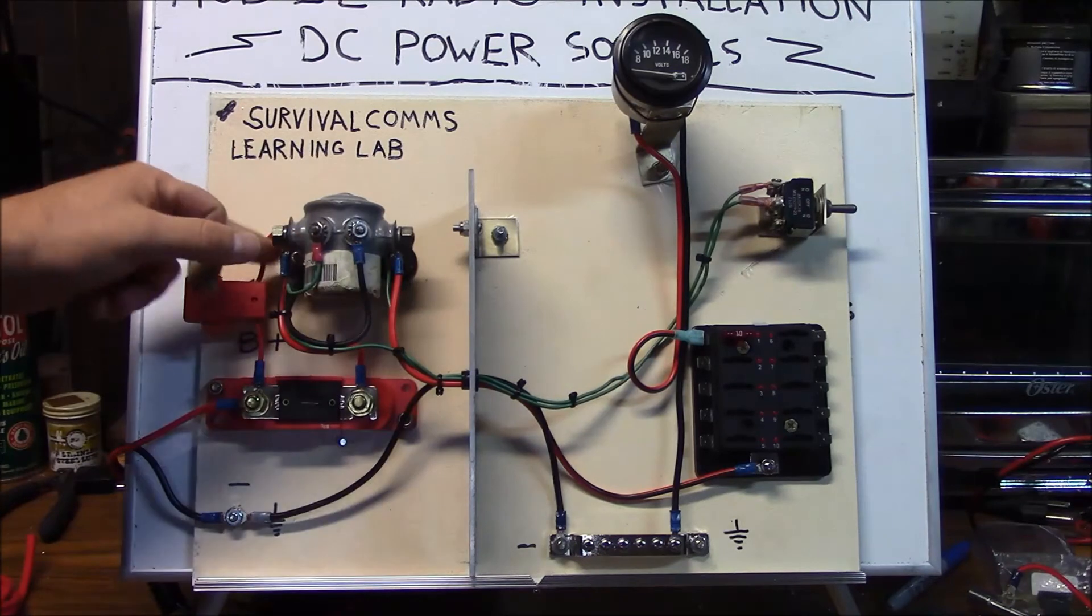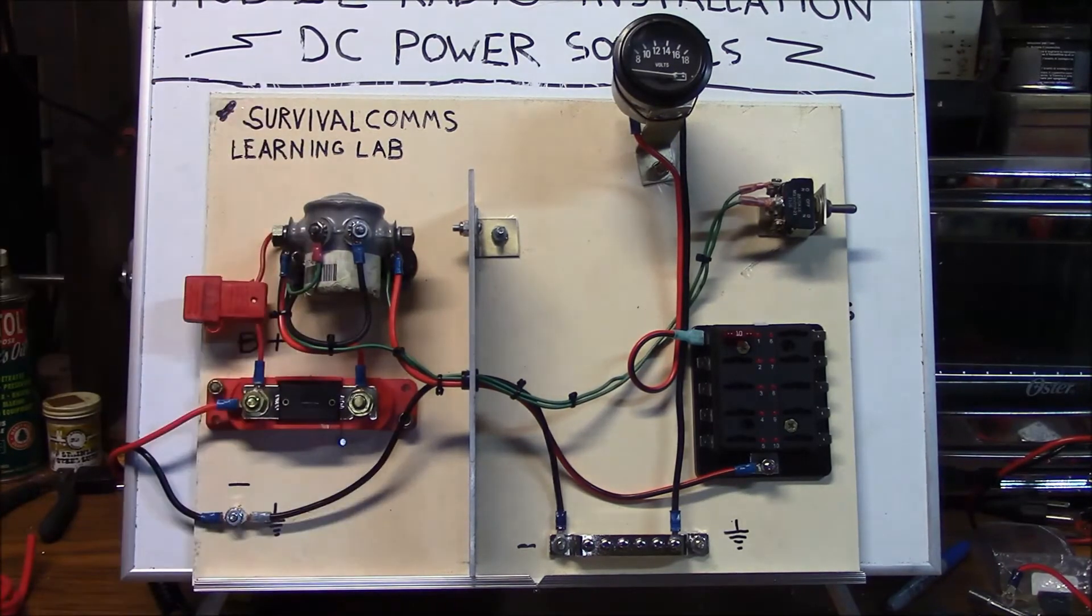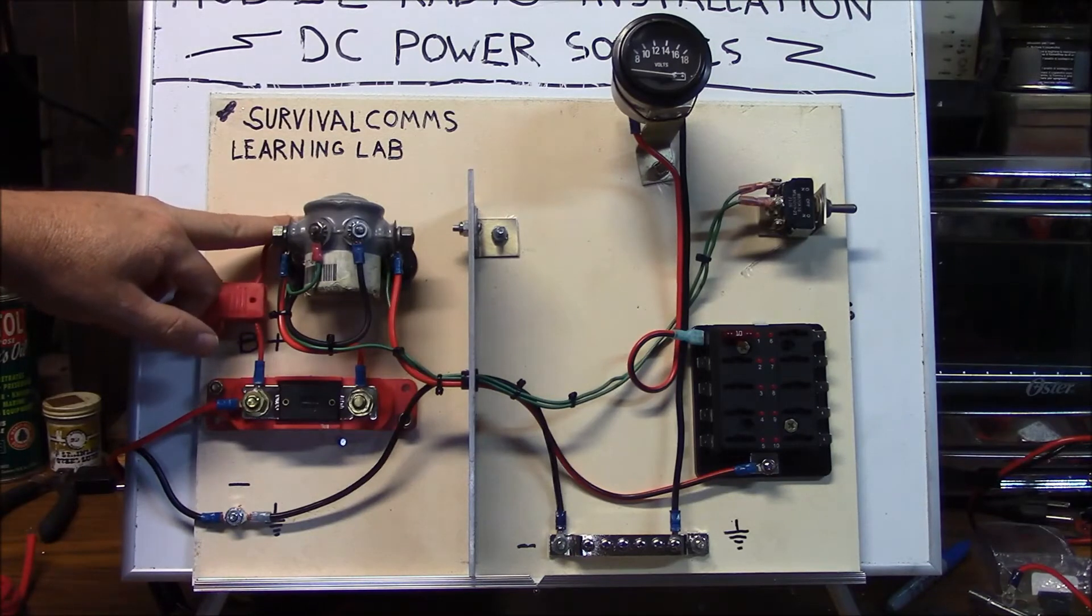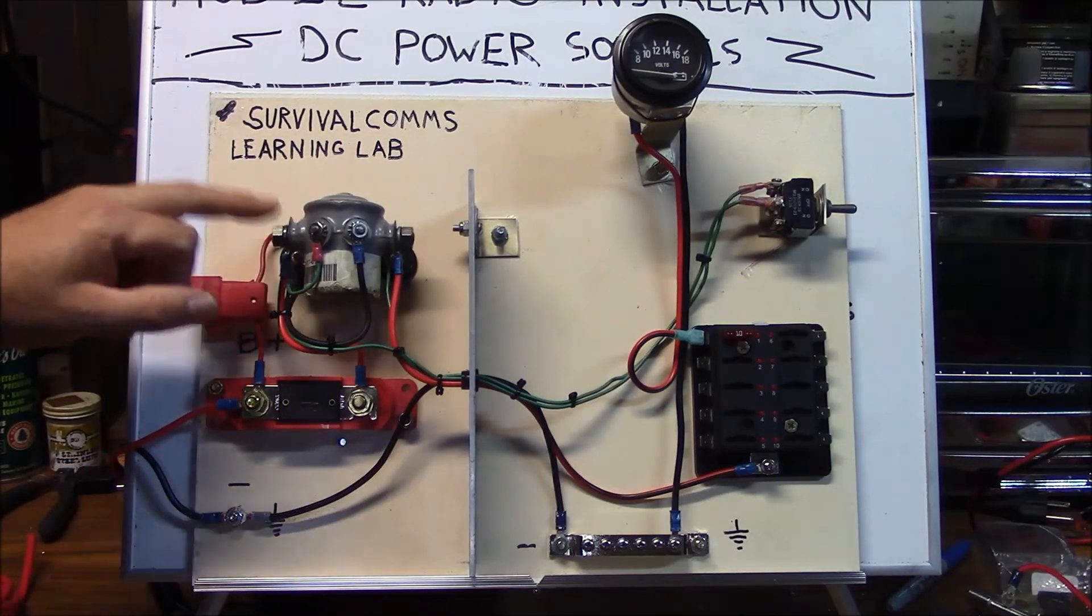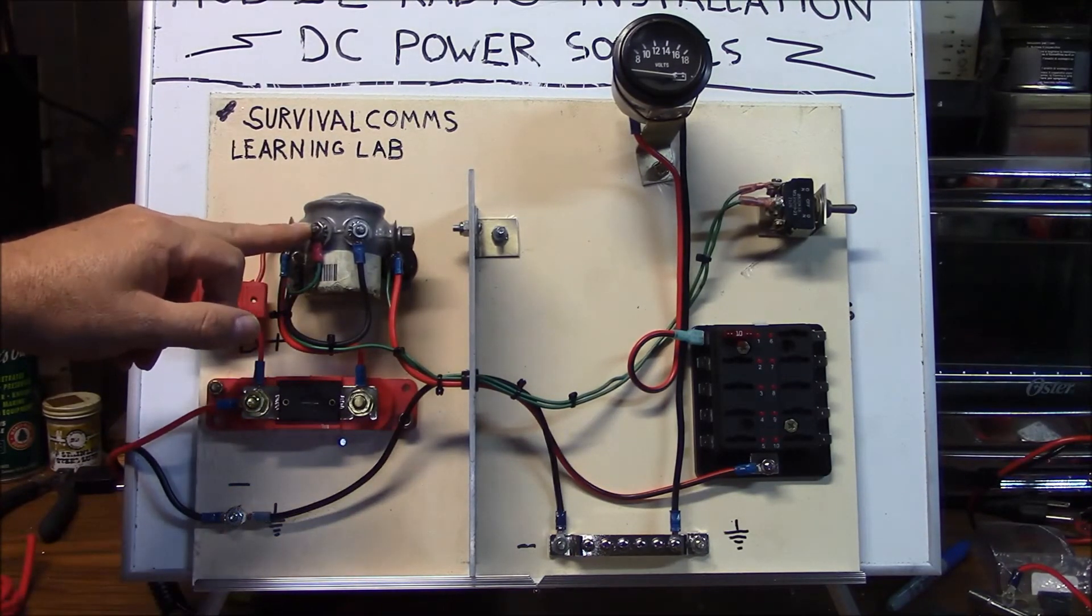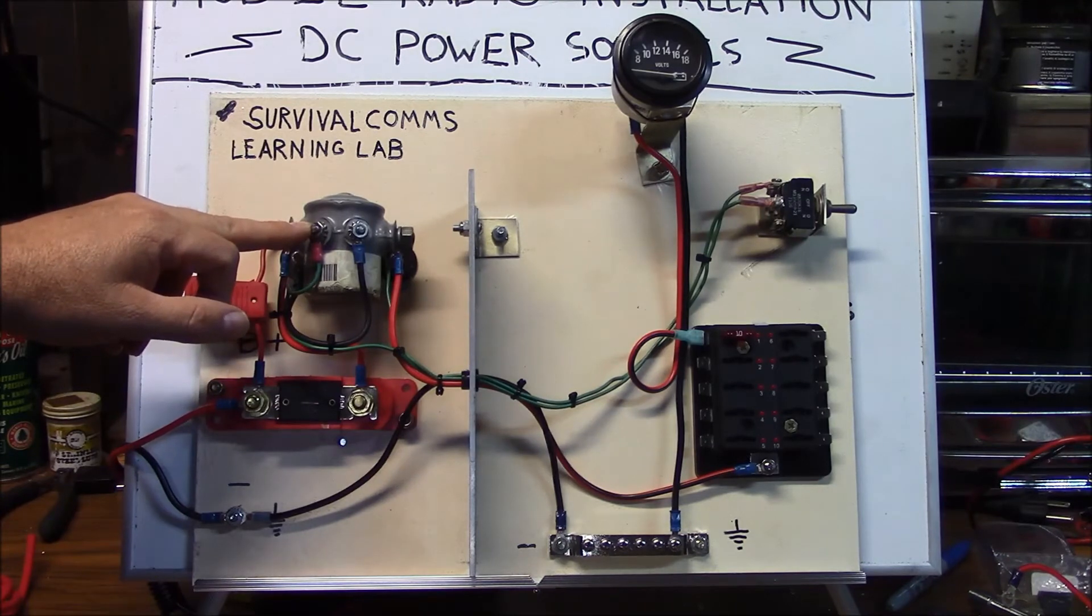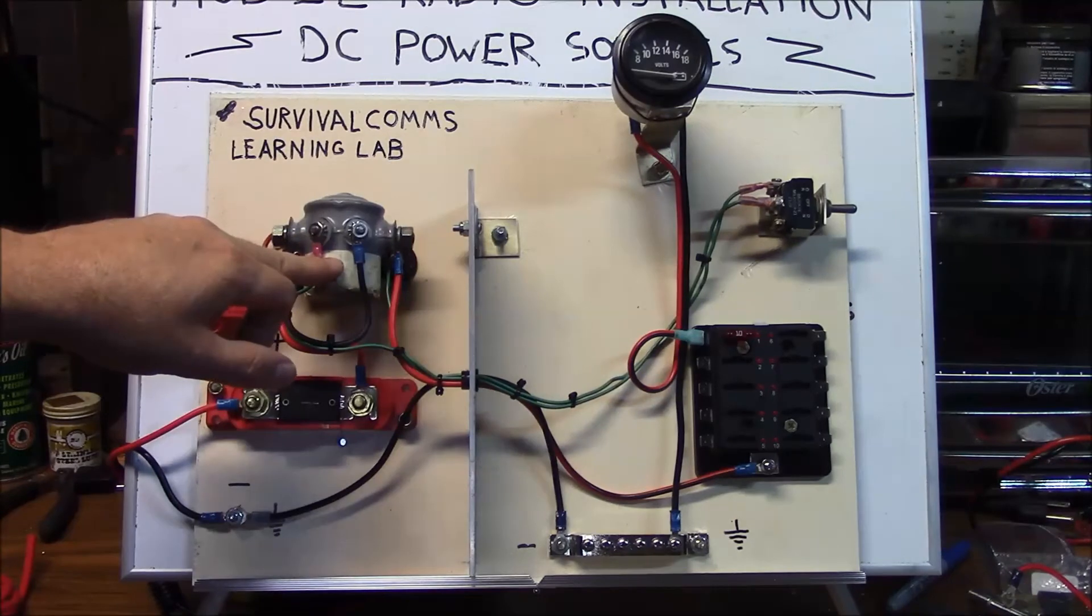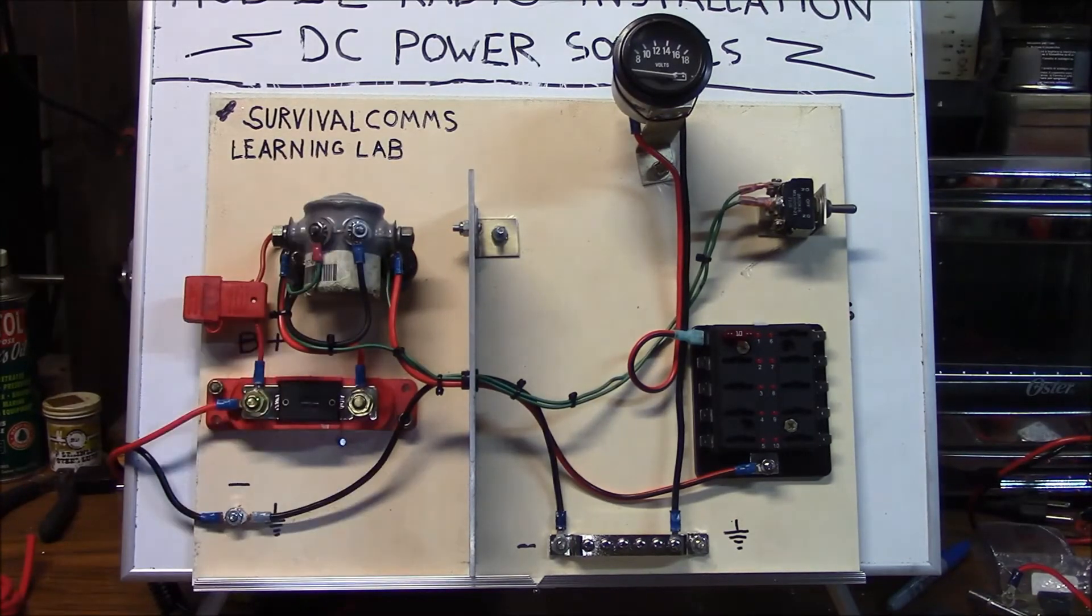Typically the three wire ones, the body of it, when you mount it to the vehicle chassis, that usually suffices for a ground for the coil. And then this terminal right here provides DC power to the relay that's switched to power the coil and close the circuit.